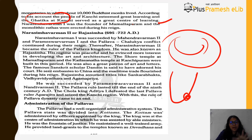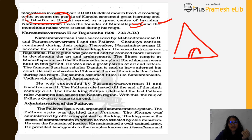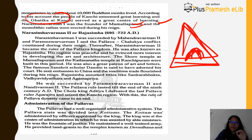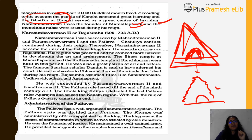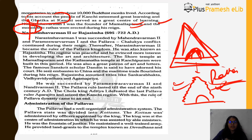Narasimha Varman I was the founder of Mamallapuram and built monolithic raths there. These were carved from a single stone — hence 'monolithic.' You will find five raths at Mamallapuram, also called the Pancha Pandava Raths (named after the five Pandavas: Bhima, Arjuna, Nakula, Sahadeva, and Yudhishthira), each signifying a different style of temple architecture. There is also the smaller Draupadi Rath. The mandapas here contain beautiful sculptures, the most popular being the Mahishasuramardini sculpture.